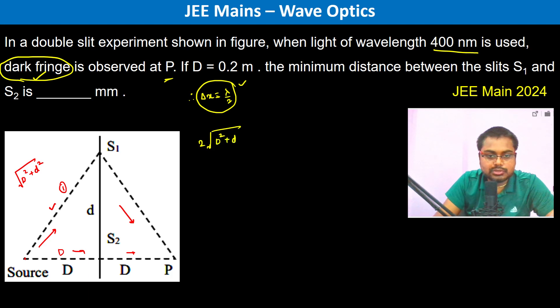Therefore we have the difference: 2 root over D square plus small d square minus 2 of D should be equal to lambda by 2. The minimum distance between the slits S1 and S2 should be found.